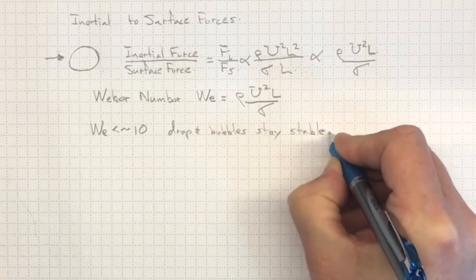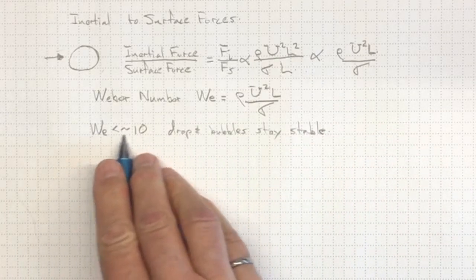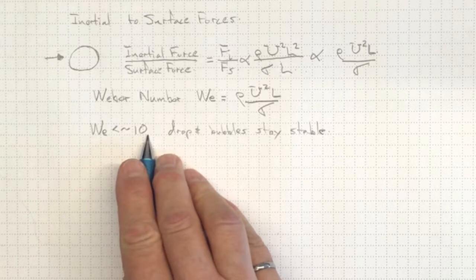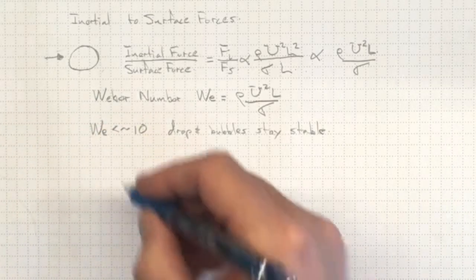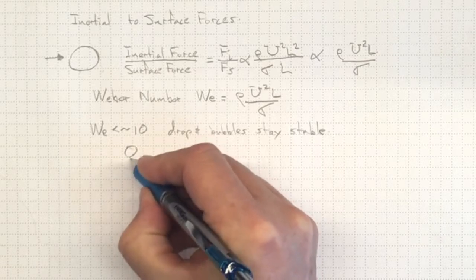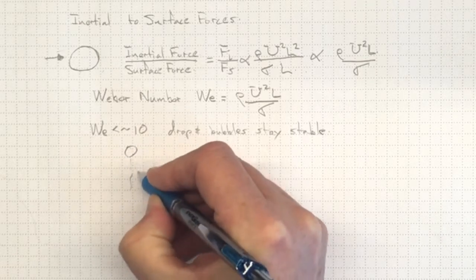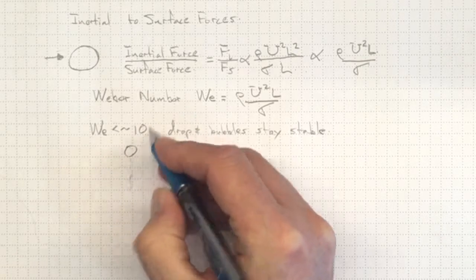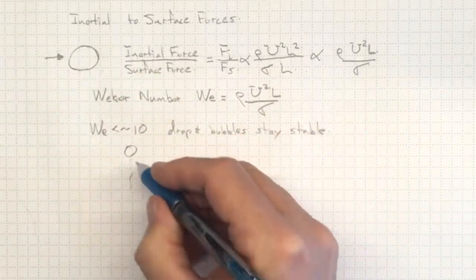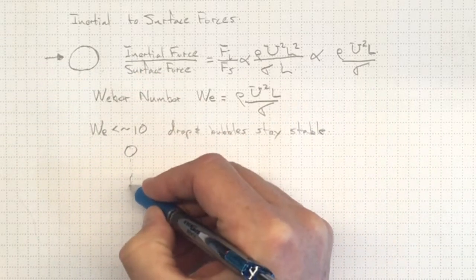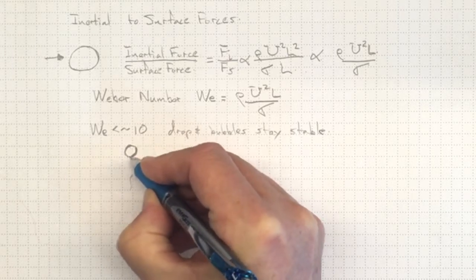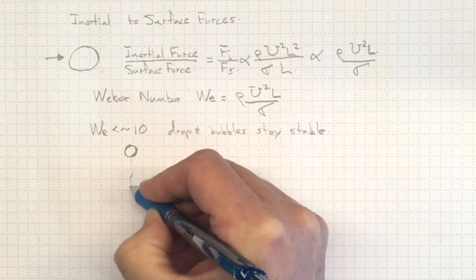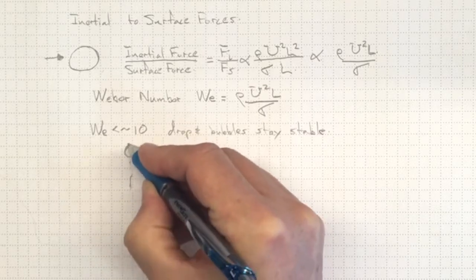And the result is that this Weber number, this maximum Weber number around 10, determines the maximum size that a raindrop can be. If we have a raindrop falling through the air, there'll be a velocity associated with its falling, whatever speed it's falling at. And the size of the drop, the bigger it gets, the larger the drag forces and other inertial forces are going to be on that drop.